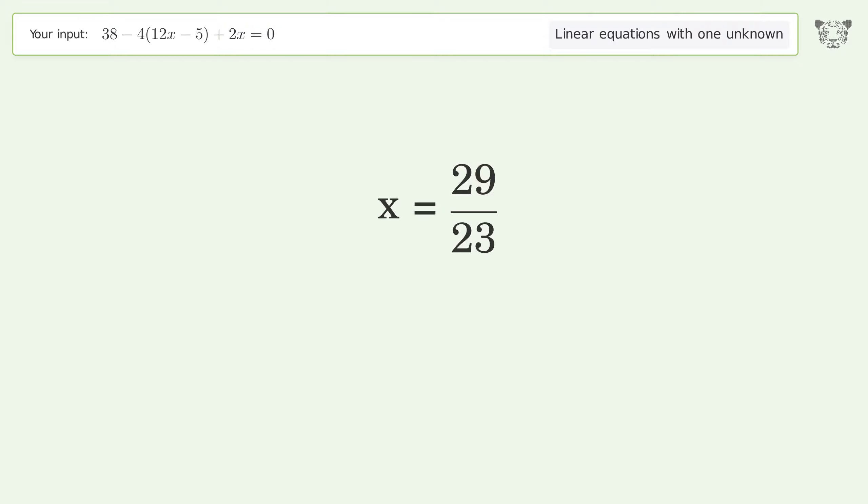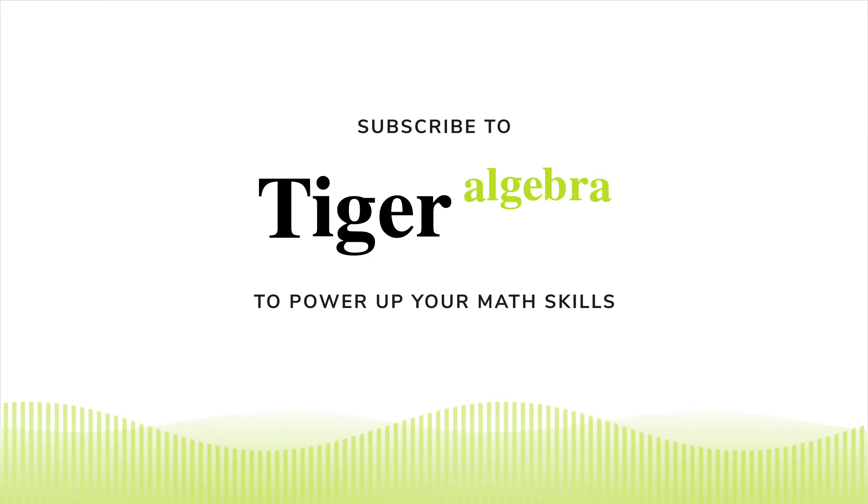And so the final result is x equals 29 over 23.